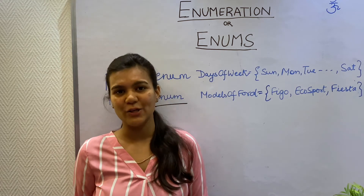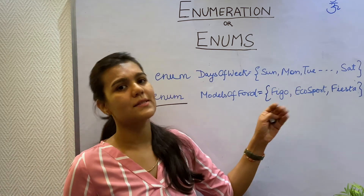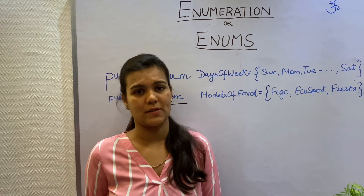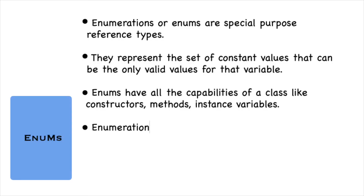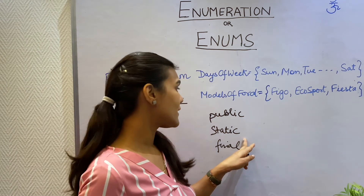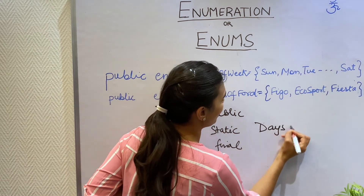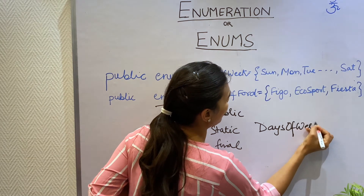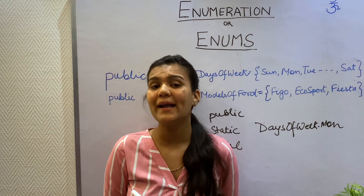Enums are very commonly used throughout the Java library. The constants defined in an enum are called enum constants, and are implicitly public, static, and final. Public — so they can be accessed anywhere. Static — so I can access them using the class name. And final — so that the value remains constant and does not change.